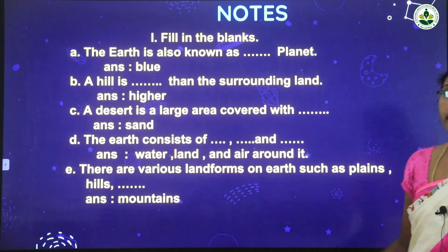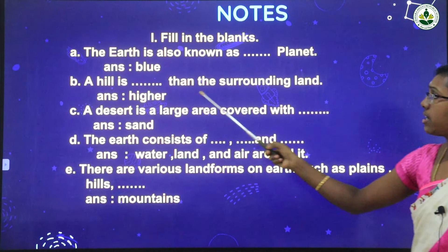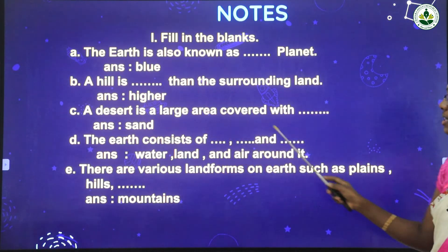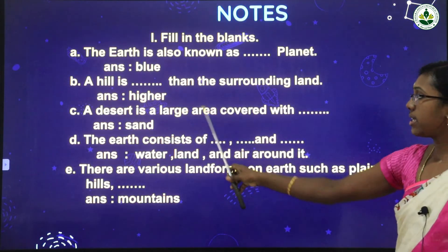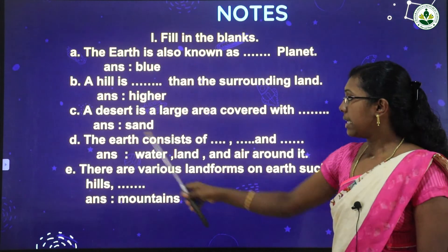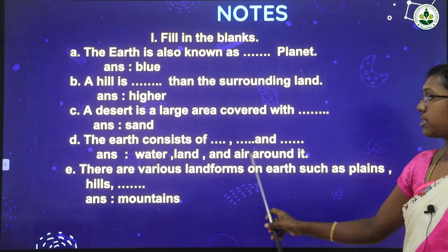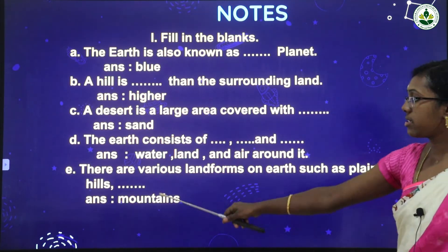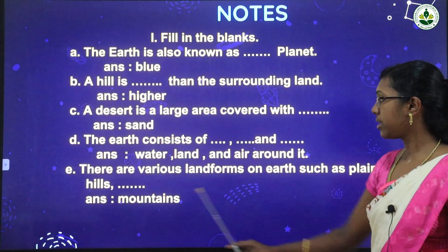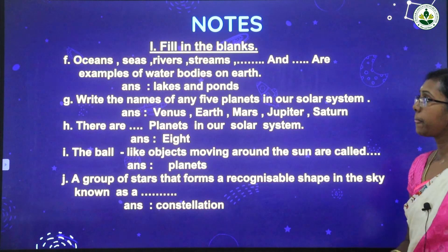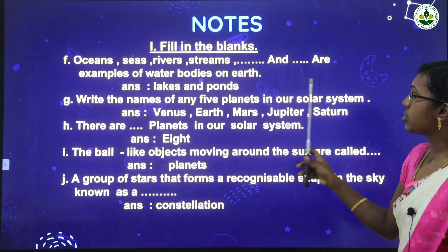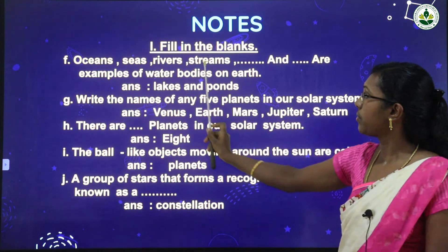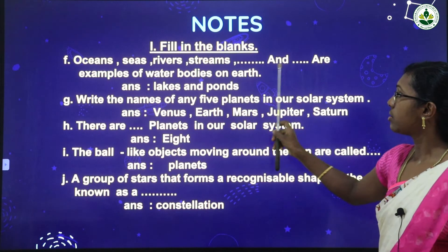For your notes and fill-in-the-blanks: Earth is also known as the Blue Planet. A hill is higher than the surrounding land. A desert is a large area covered with sand. The Earth consists of water, land, and air. There are various landforms on Earth such as plains, hills, and mountains. Oceans, seas, rivers, streams, lakes, and ponds are examples of water bodies on Earth.